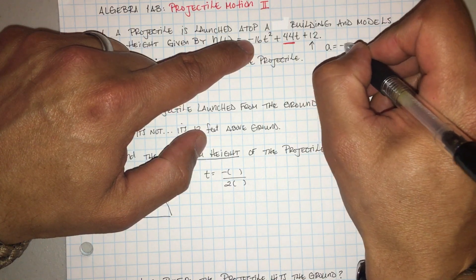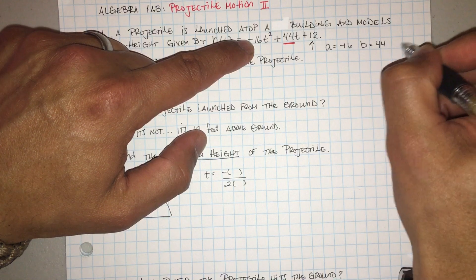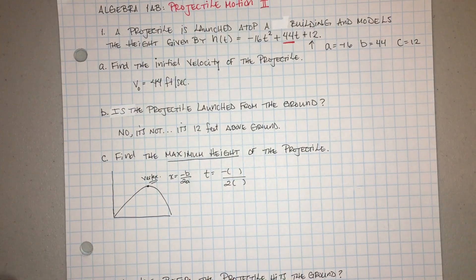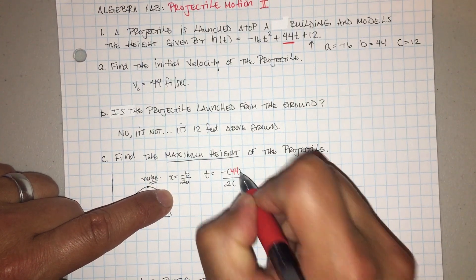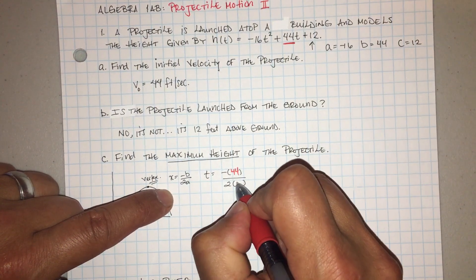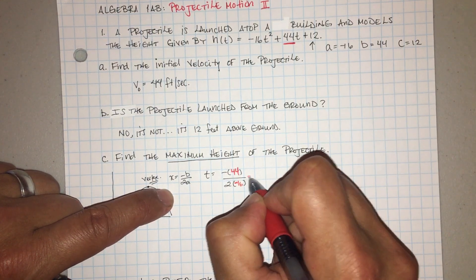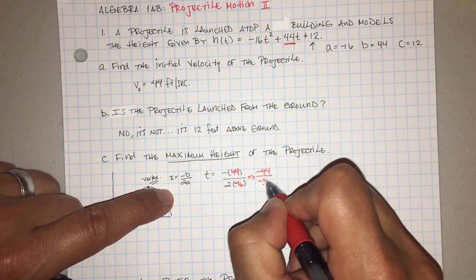A, la a, is negativo 16. The b is 44 and the c is 12. Okay, so if I go ahead and substitute my values, negative b, negativo 44, and then 12 is, I'm sorry, a is 16, negative 16, negative. So now this is going to give me negative 44 over negative 32.